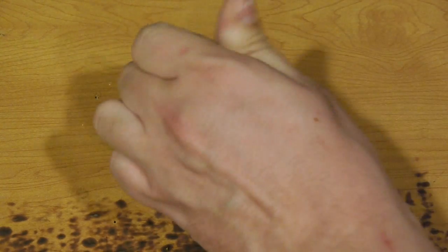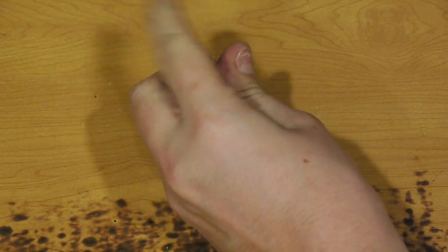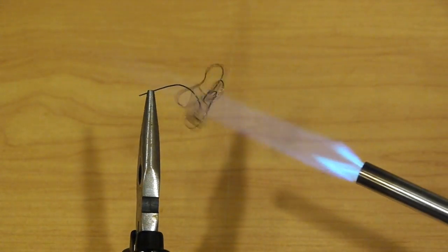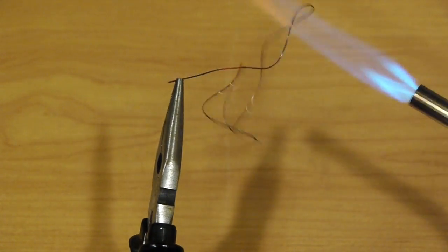Now if I crumple the wire up a bit, and then grab some needle nose pliers and apply my heat source, it's going to try and jump back into the position that we baked it into.